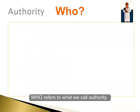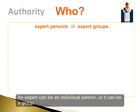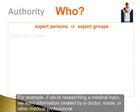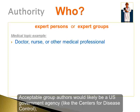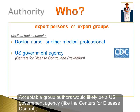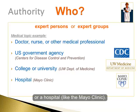Who refers to what we call authority. In general, we should only use information created by experts who have authority. An expert can be an individual person or it can be a group. For example, if we're researching a medical topic, we want to find information created by a doctor, nurse, or other medical professional. Acceptable group authors would likely be a U.S. government agency like the Centers for Disease Control, a website from a college or university like UW Department of Medicine, or a hospital like the Mayo Clinic.